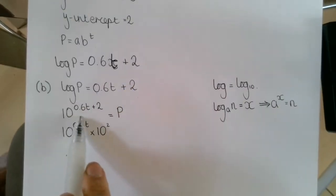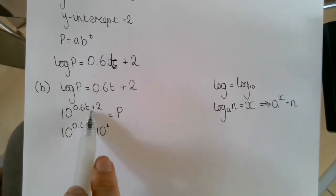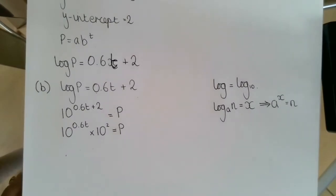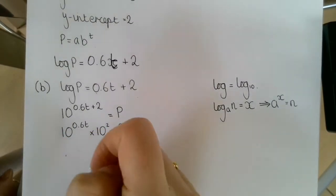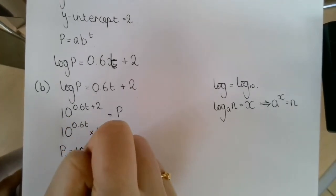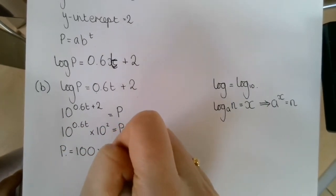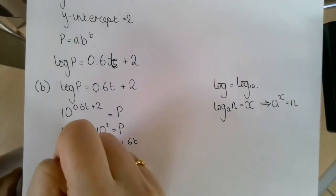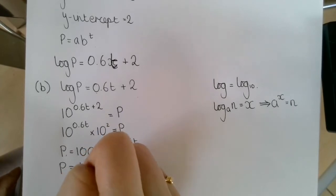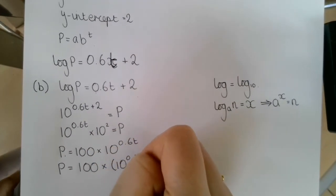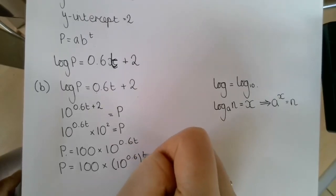Rewriting this expression using your laws of indices, that's equal to p. So I know that p is equal to 100 times 10^(0.6t). I'm going to rewrite that as p is equal to 100 times 10 to the power of 0.6 to the power of t.